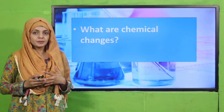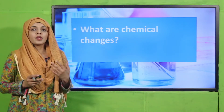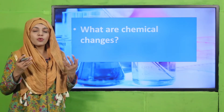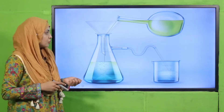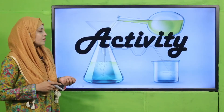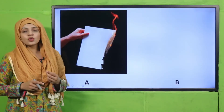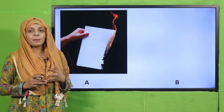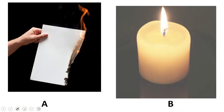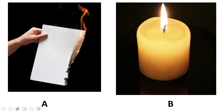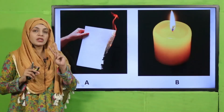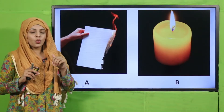A permanent change in which new products are formed is called a chemical change. Now it's time for an activity — look at the pictures very carefully. Picture A and Picture B: in both pictures, burning is happening. Paper is burning in one, and a candle is burning in the other. Dono pictures ke andar burning ho rahi hai.